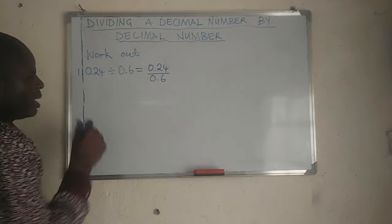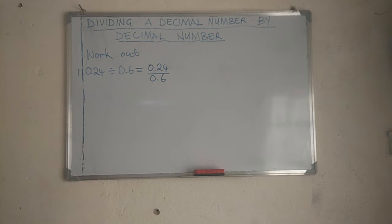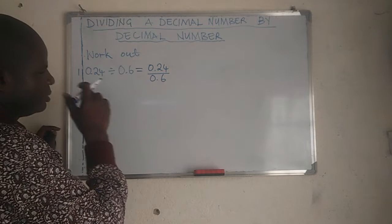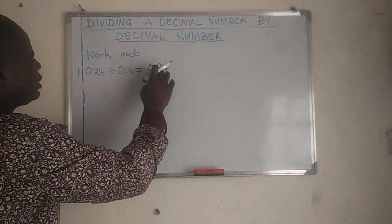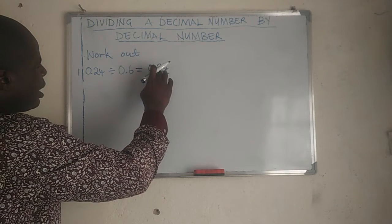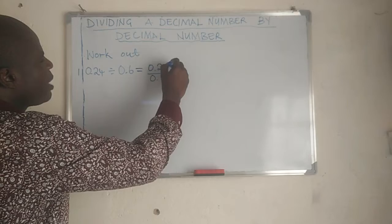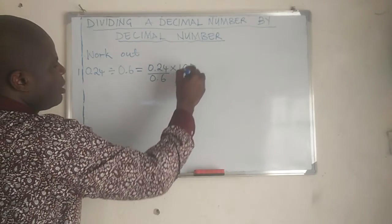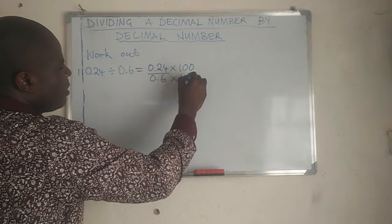So what am I going to do? I'm going to multiply both numbers by 100, because there are two decimal numbers here.